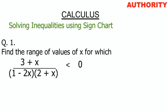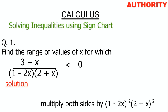We have the expression (3 + x) all over (1 - 2x)(2 + x) less than zero. What we're going to do is remove the denominator — we want it in one line, no fraction. So we multiply both sides by the square of each denominator factor: (1 - 2x)² and (2 + x)².